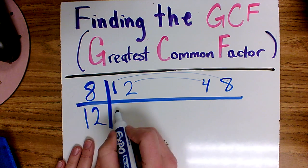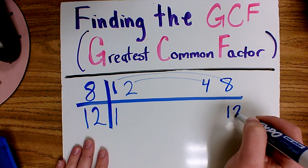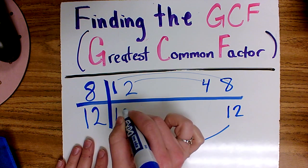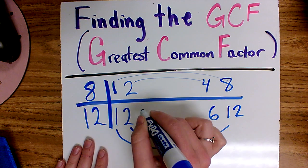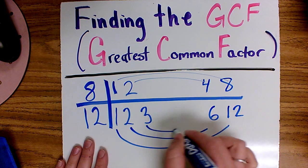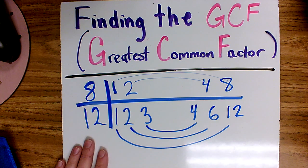Then I'm going to go down to 12. I know that 1 times 12 is 12, 2 times 6 is 12, and 3 times 4 is 12. These numbers are all factors of 12.